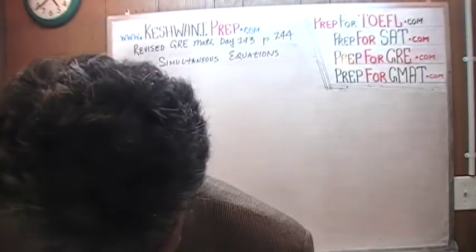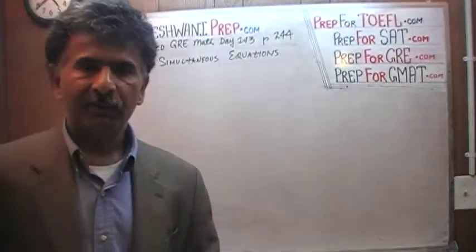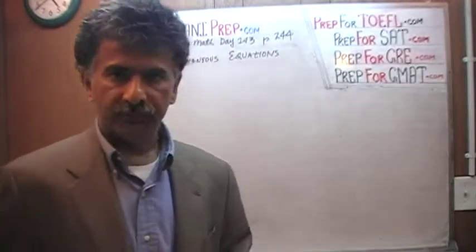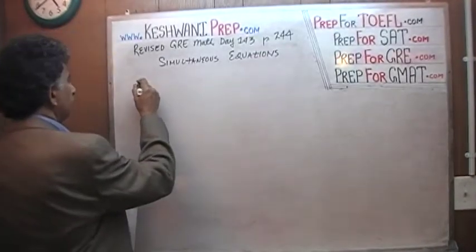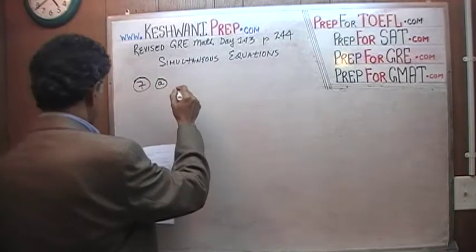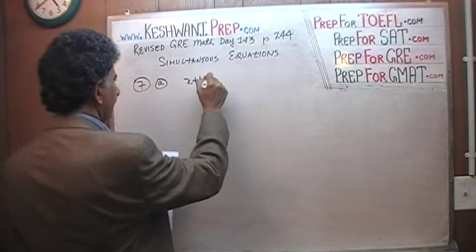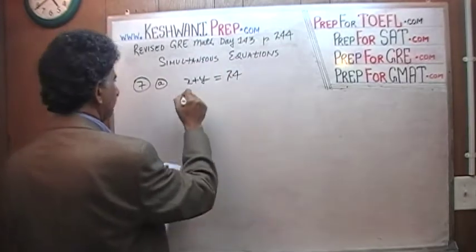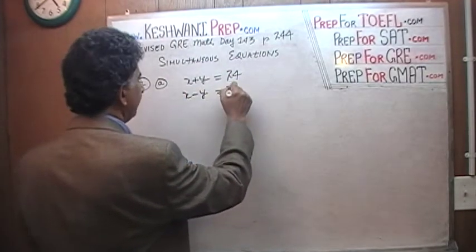Problem number 7. We are given three sets of simultaneous equations and our job is to solve them. The very first one — problem number 7 — tells us that x plus y equals 24, and also that x minus y equals 18.